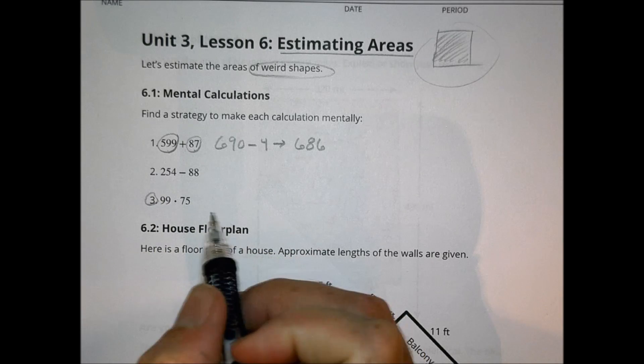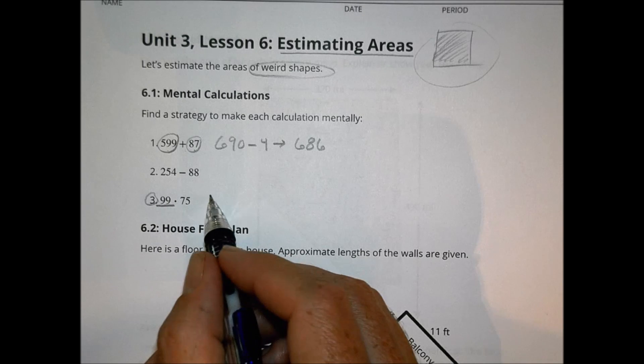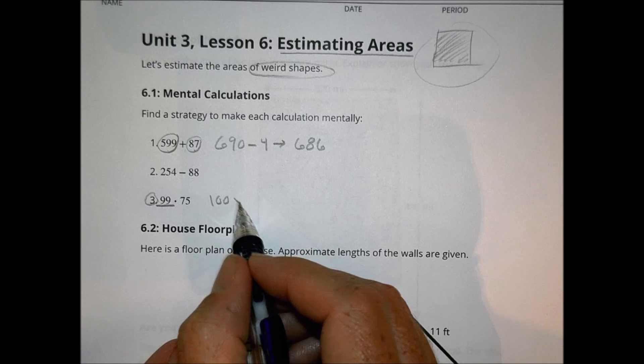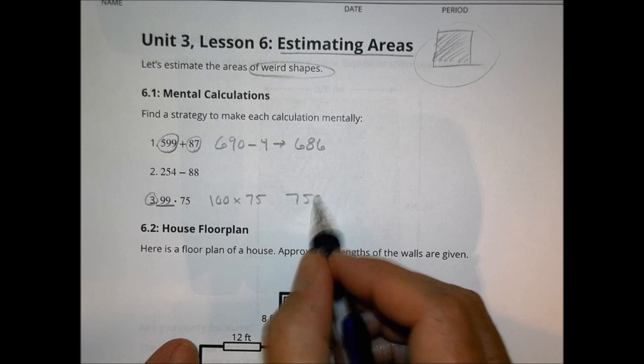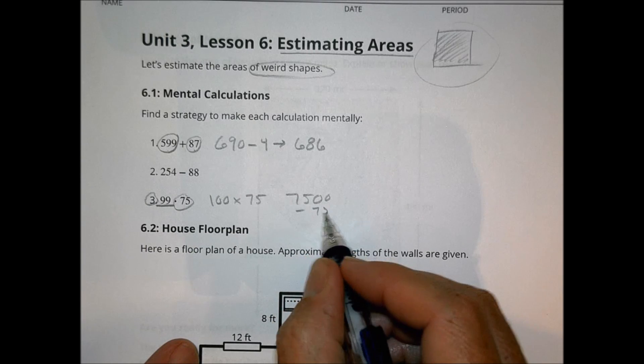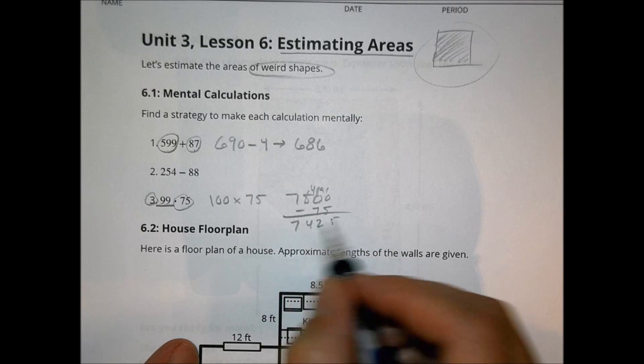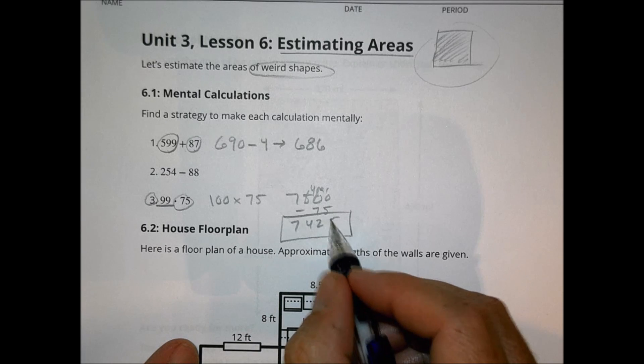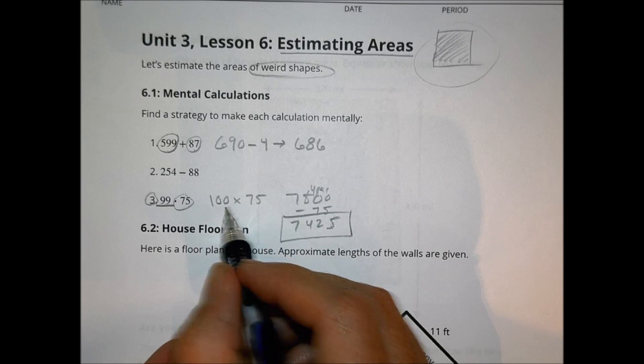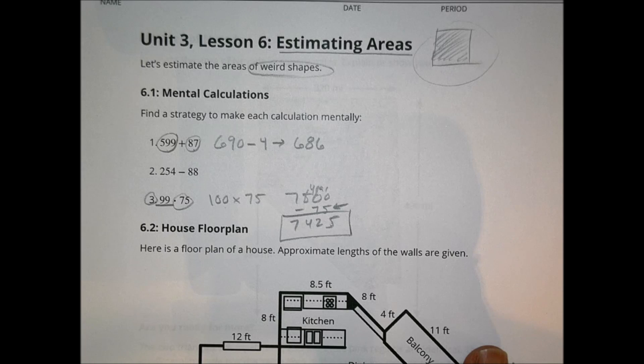And in reality, we might say this is really 686 to get that figured out there. This one here is actually a good problem to look at because it really is going to apply to what we're doing today in terms of estimating. 99 is pretty close to 100. So if I make it a little bit bigger and multiply it by 75, I have a nice 7500 number there. Now all I have to do is take away one of those 75s to come up with, in this case here, 7,425 for the actual number there.